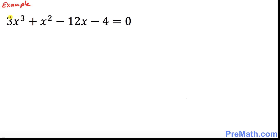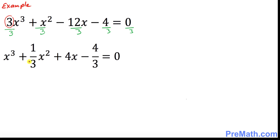In this cubic equation you can see that our leading term is not 1 — it is 3. So in order to make it 1, we must divide by 3 across the board. Once we divide by 3, our equation is going to look like this, and our leading term is now 1.